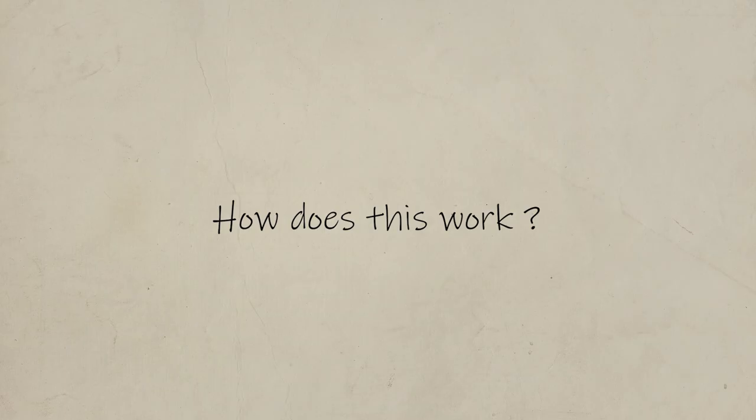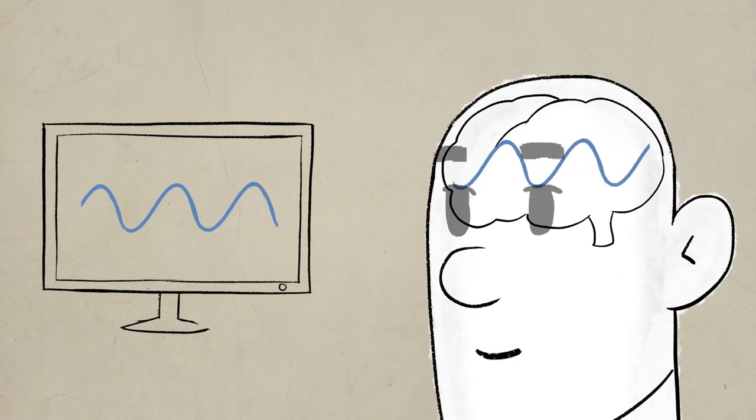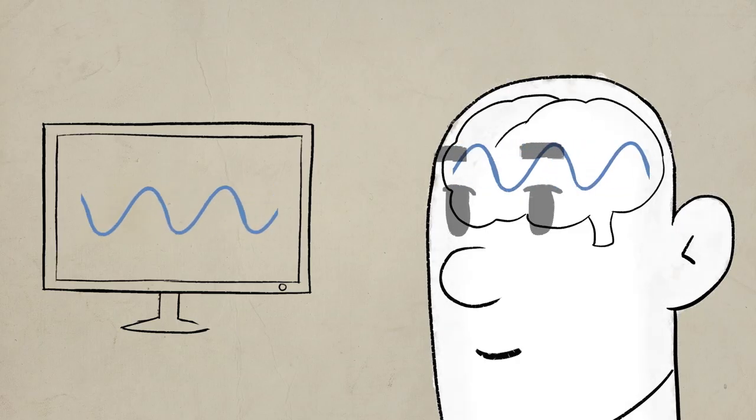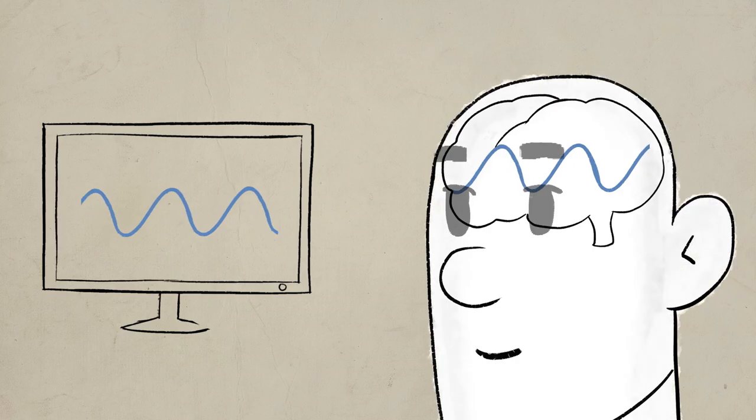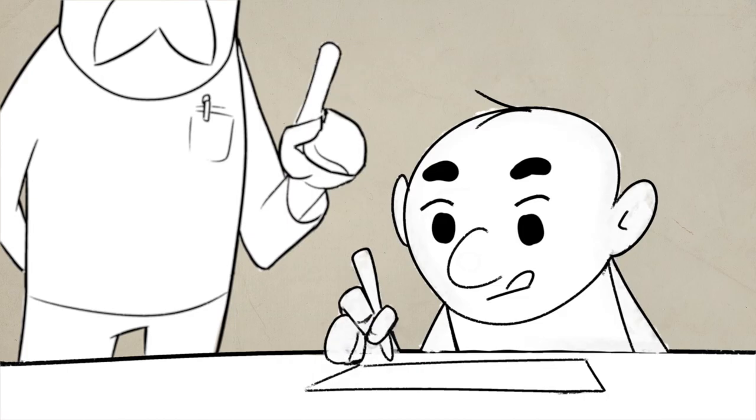But how does this work? Neurofeedback informs our brains through visual and auditory feedback to learn to correct signals spontaneously and rectify the waves and connections that are not adapted to the person. It's a bit like having a teacher next to you who points out errors and allows the person to correct them.